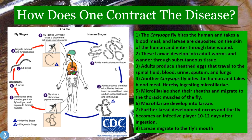The adult worms produce sheathed eggs — microfilaria — that travel to the spinal fluid, blood, urine, sputum, and lungs of the patient. Then another Chrysops fly comes along, bites the human, takes a blood meal, and ingests all these microfilaria. This previously uninfected fly now becomes infected because it bit this human.